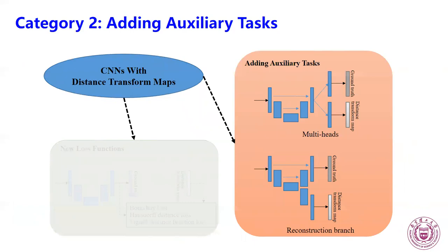The second category is adding auxiliary tasks. Both multi-task and reconstruction branch approaches aim at regressing the DTM. The main difference is that multi-task approaches share the whole backbone network, while the reconstruction branch approach only shares the encoder network.